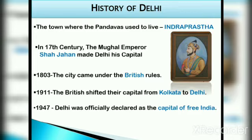The history of Delhi is as old as the epic Mahabharata. The town was known as Indraprastha, where the Pandavas used to live. In the 17th century, the Mughal Emperor Shah Jahan made Delhi his capital. In the year 1803, the city came under British rule.